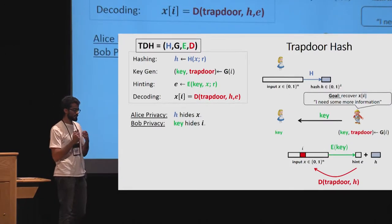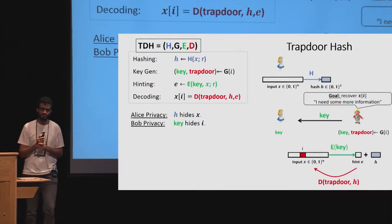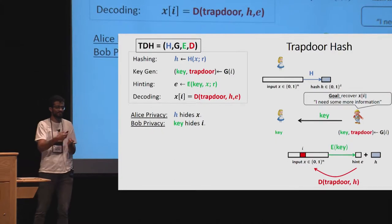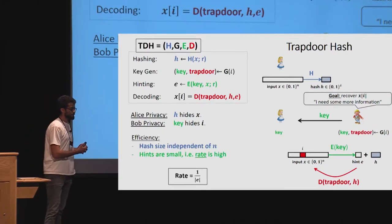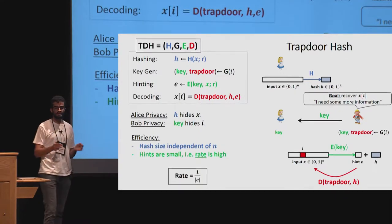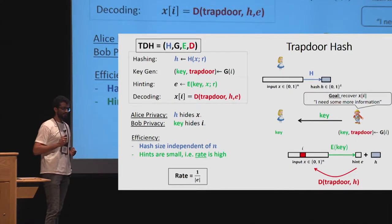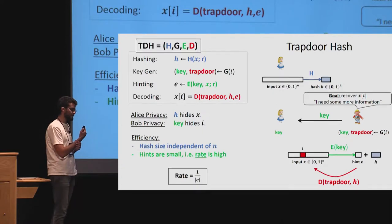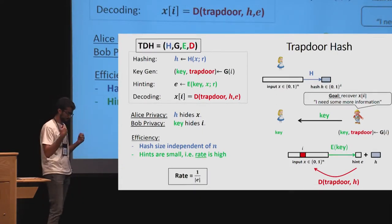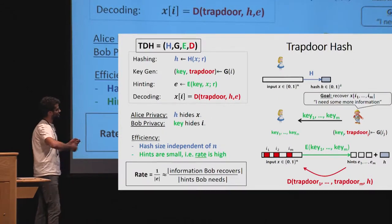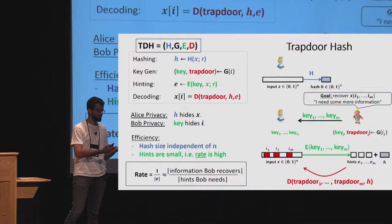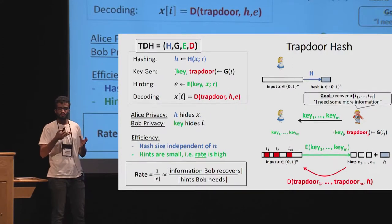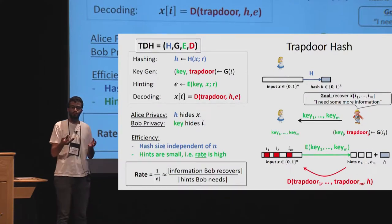We require security for both parties: Alice's input x should remain private (the hash should reveal nothing about it), and Bob's index i should remain private (the key he sends to Alice should reveal nothing about i). Our main efficiency goals: first, the hash should be small with size independent of n; second, the hints should be small. We define the rate of trapdoor hash as the inverse of the hint length.